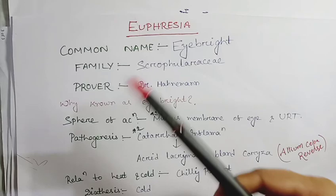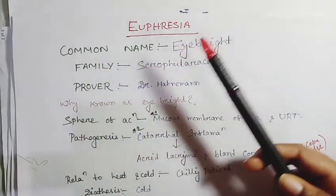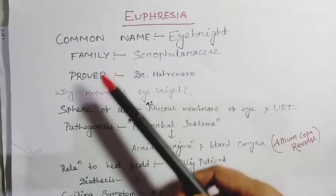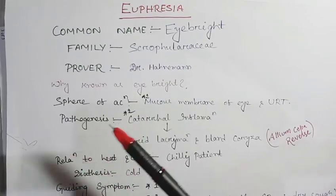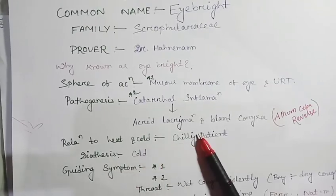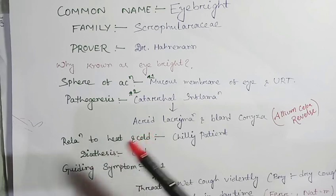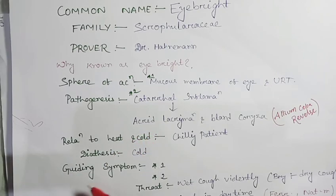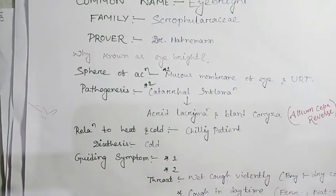What did we discuss? In your exam, write: common name, then family, then prover, why it's named Euphrasia or Eyebright, sphere of action, pathogenesis, relation to heat and cold, diathesis - susceptibility to disease, guiding symptoms, lastly modalities and notes. In this way you write in your exam and secure good marks. Thank you, have a nice day.